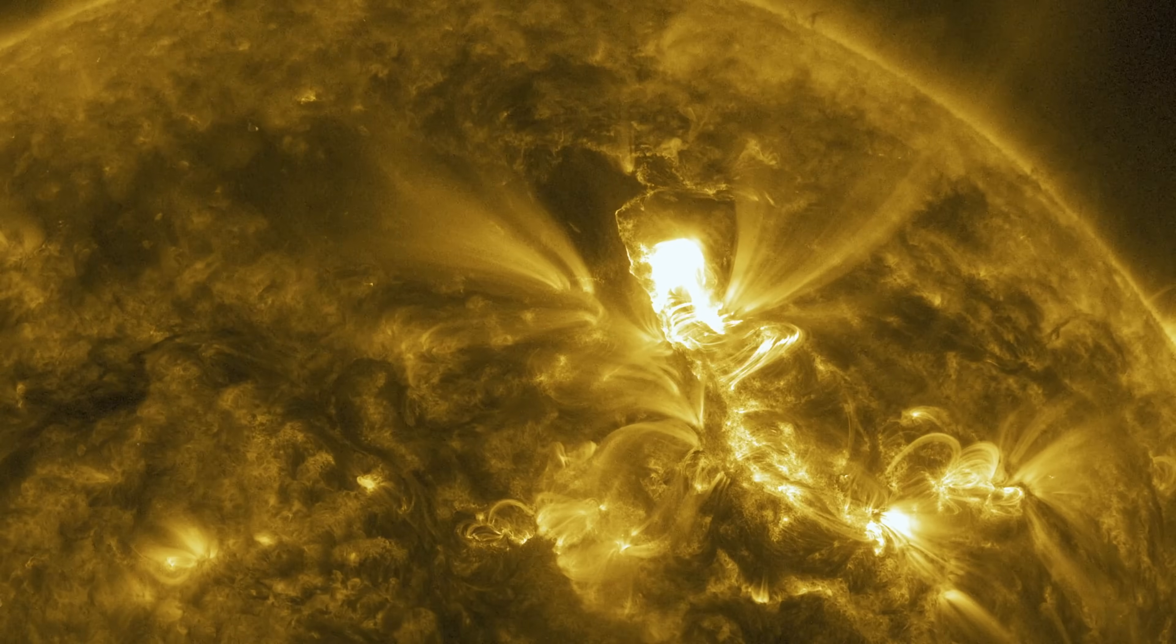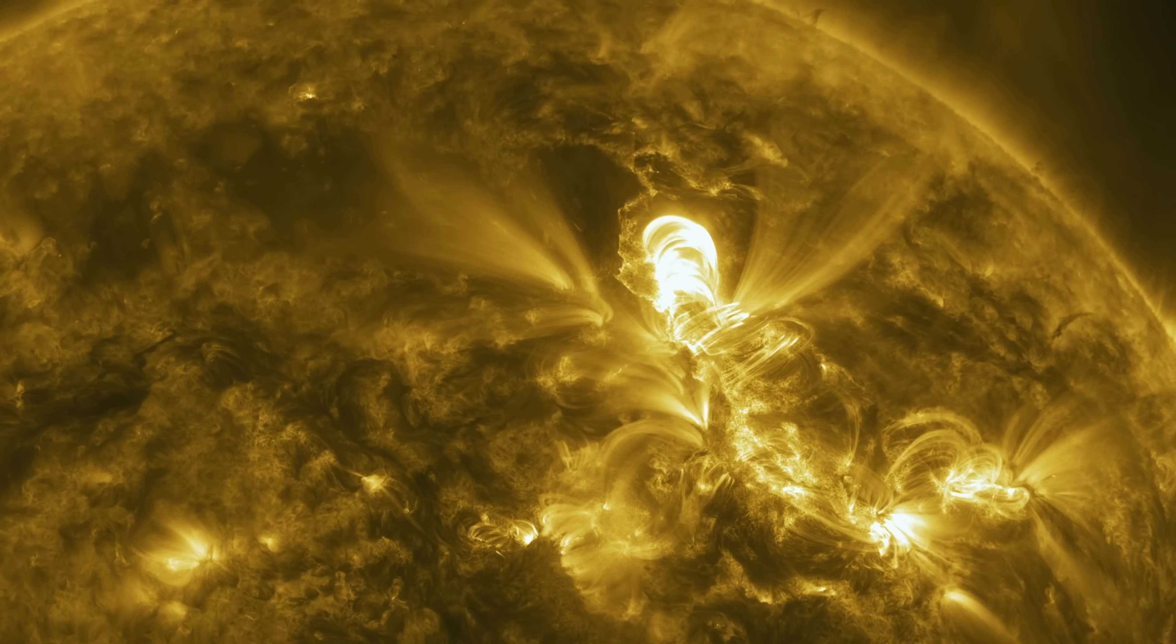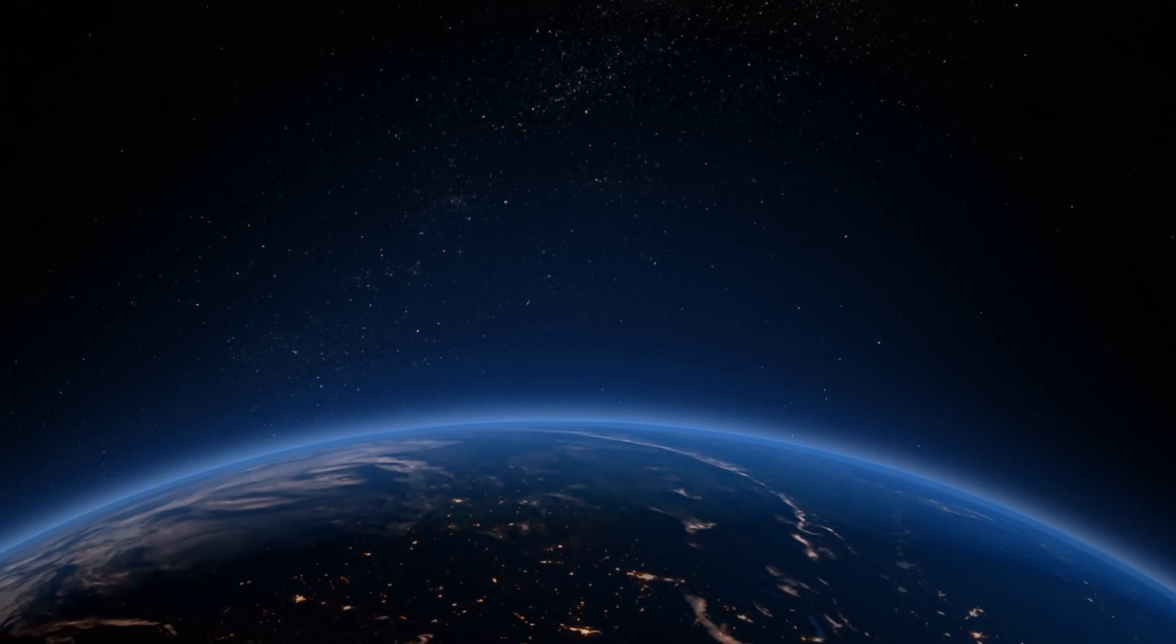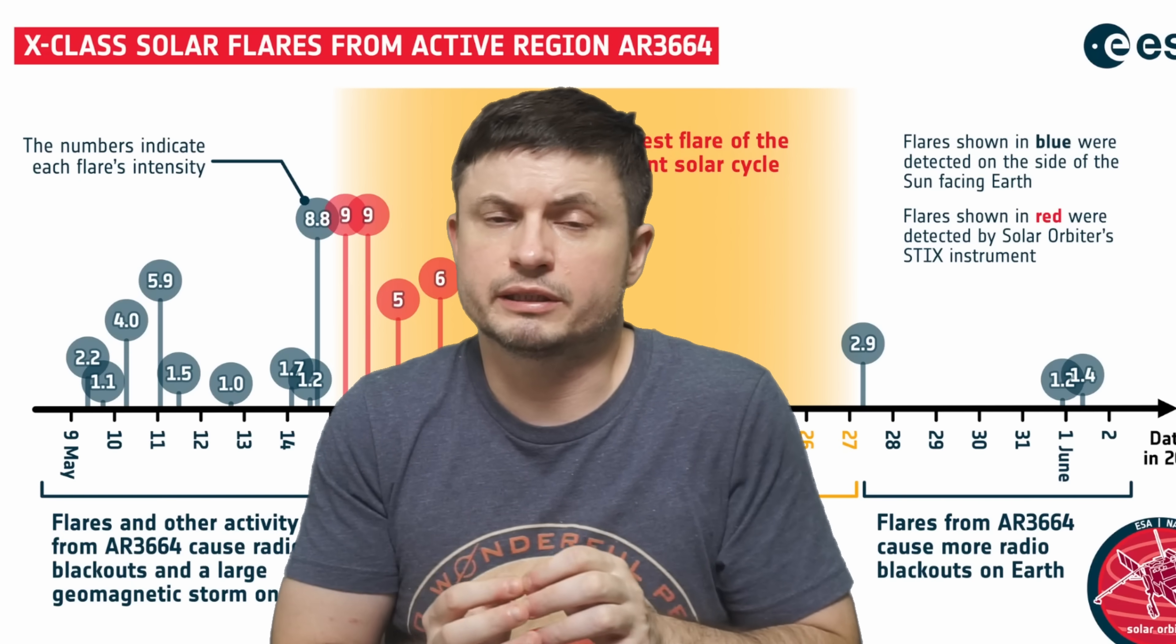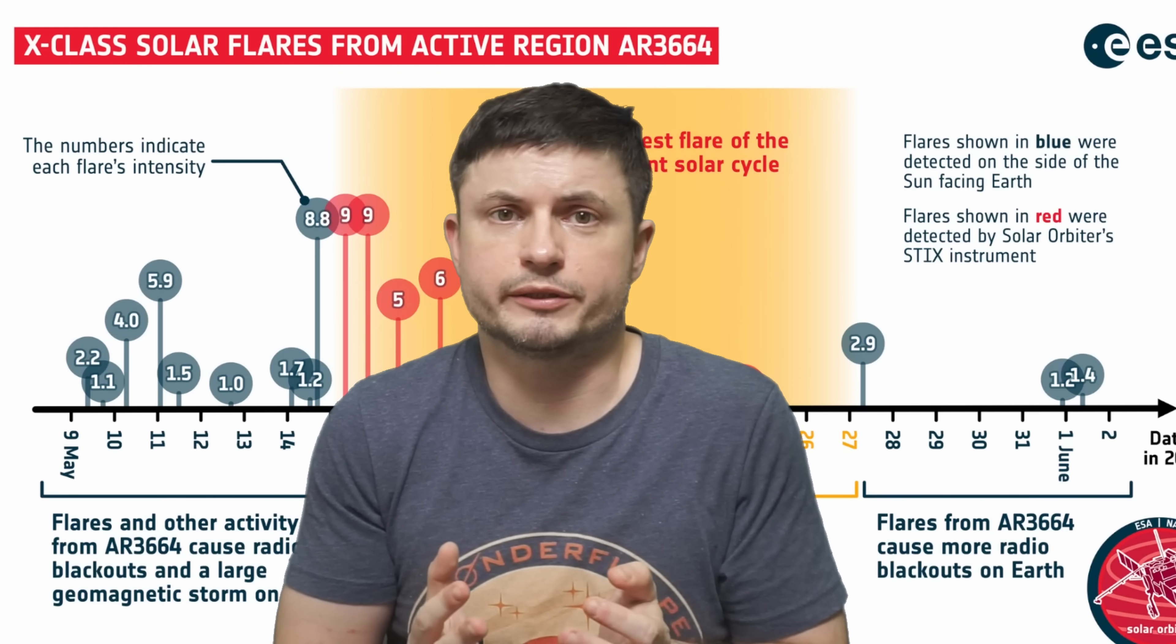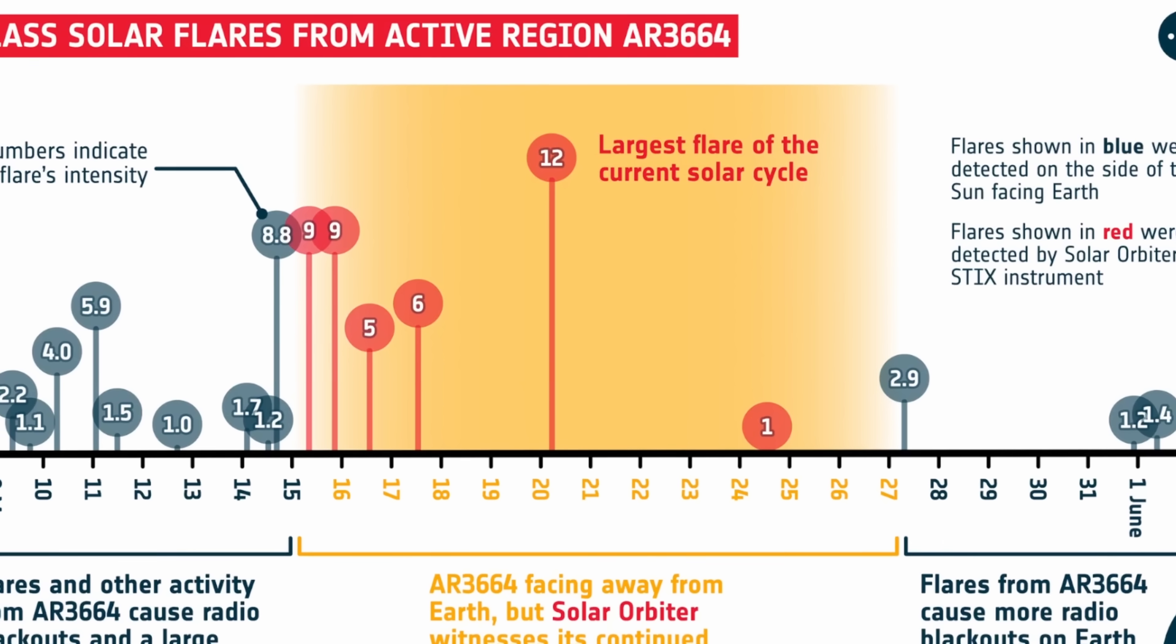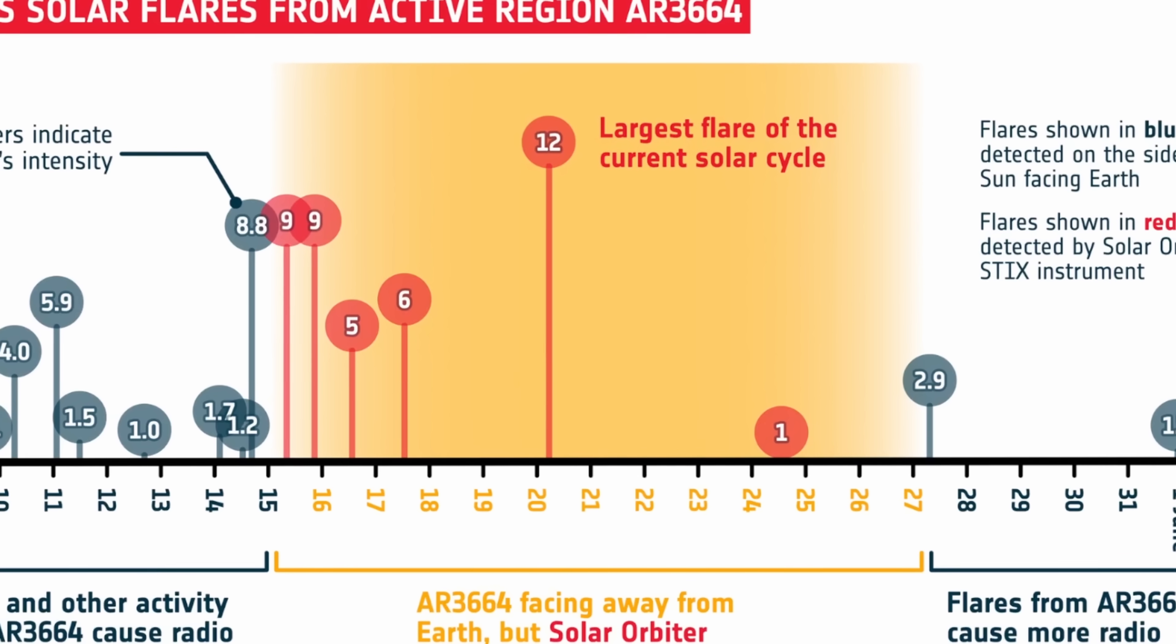Solar flares happen quite a lot. These are essentially large eruptions of electromagnetic radiation, or basically light, that can then travel toward our planet and very often cause immediate radio blackouts. While something like this did happen during this period, as you can see here on May 20th, one of the most powerful solar flares in the last few decades was observed.